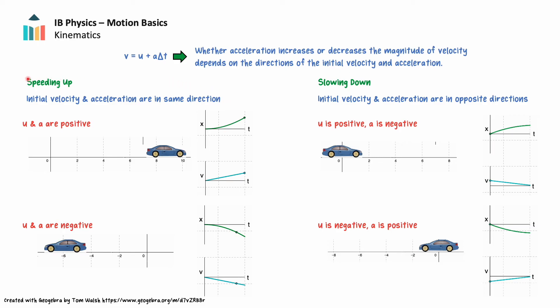Now let's consider scenarios in which the initial velocity and acceleration are in opposite directions. If an object has a positive velocity but accelerates in a negative direction, the object gets slower — its speed decreases. We can see this on a position-time graph where the gradient gets less steep over time. The same motion on a velocity-time graph is a straight line with a negative gradient above the time axis. The velocity approaches zero as the object slows.